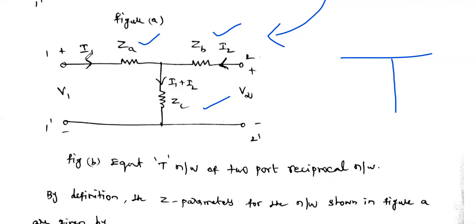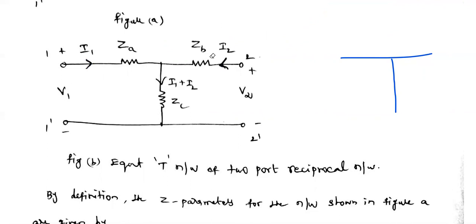If the current flowing through ZA is I1 and the current flowing through ZB is I2, then what is the current flowing through the center impedance ZC? It is the addition of I1 plus I2. So now we are going to find the relation between the impedances ZA, ZB, ZC in terms of the impedance parameters Z11, Z12, Z21, and Z22.